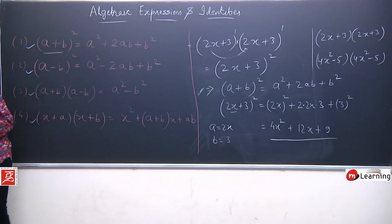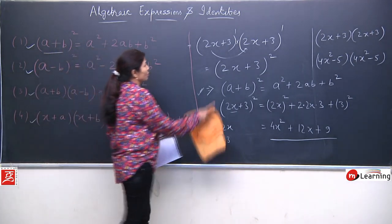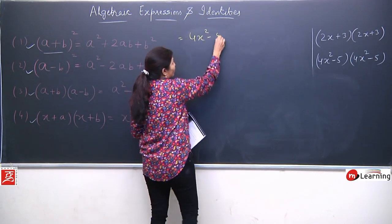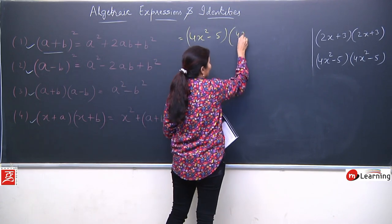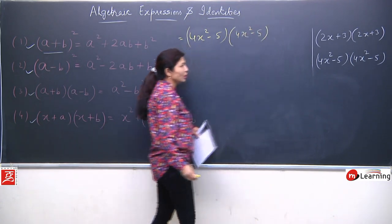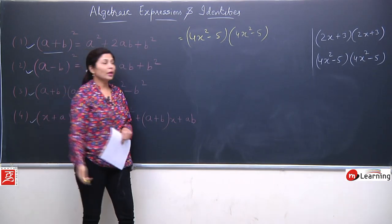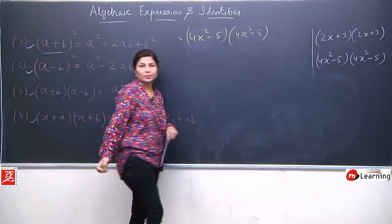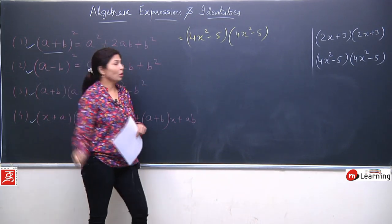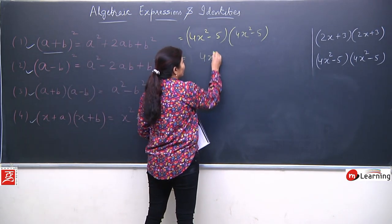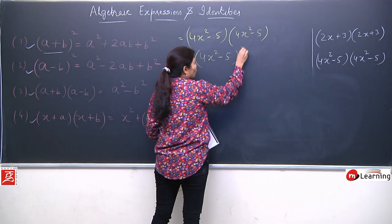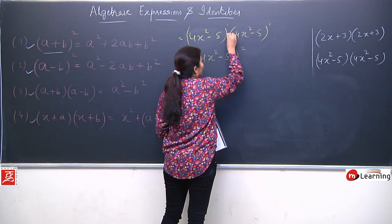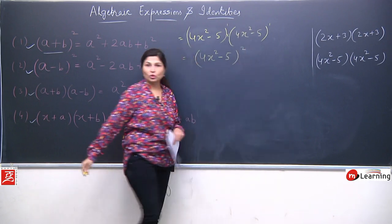Now another example I had randomly taken — with a minus sign. So I'll solve that for you: (4x² - 5)(4x² - 5). Following the old procedure we would multiply each term with both terms, which is also correct, but it would be long. So we will prefer identity. Can we write this as whole square? Yes, because the same term is appearing twice — both have power 1, and multiplication between them means powers add up.